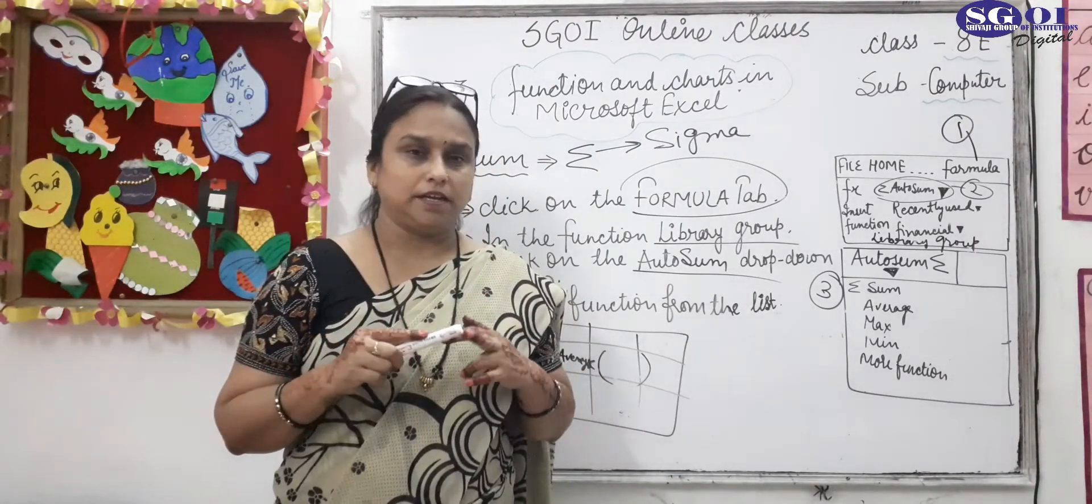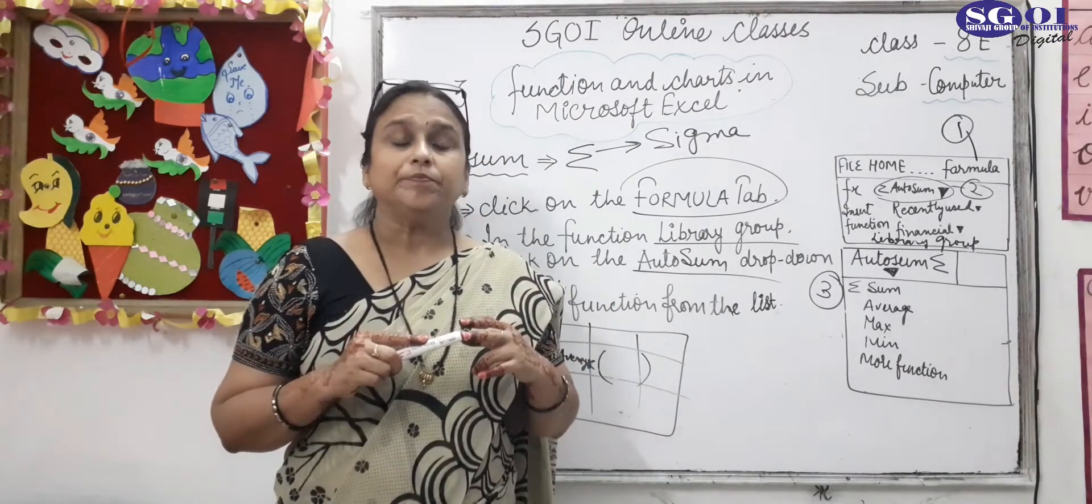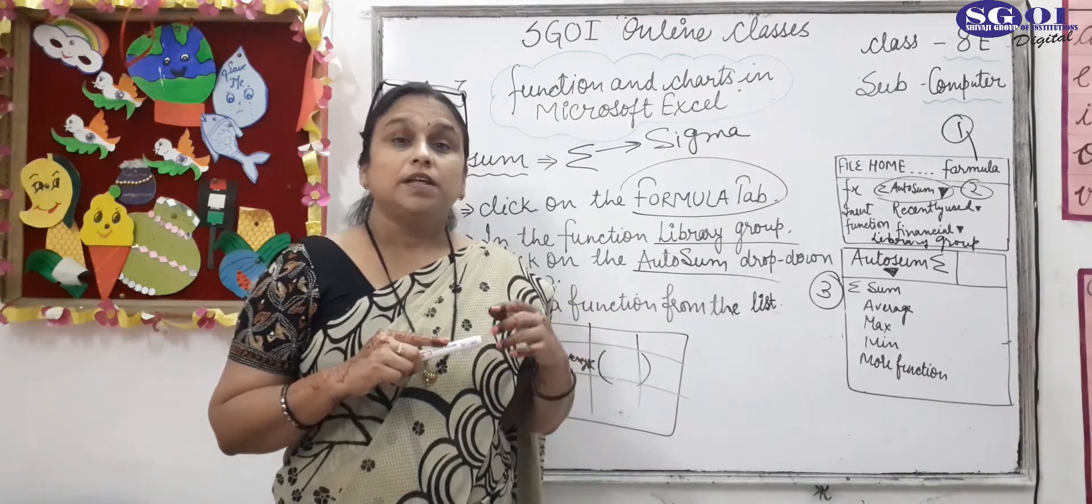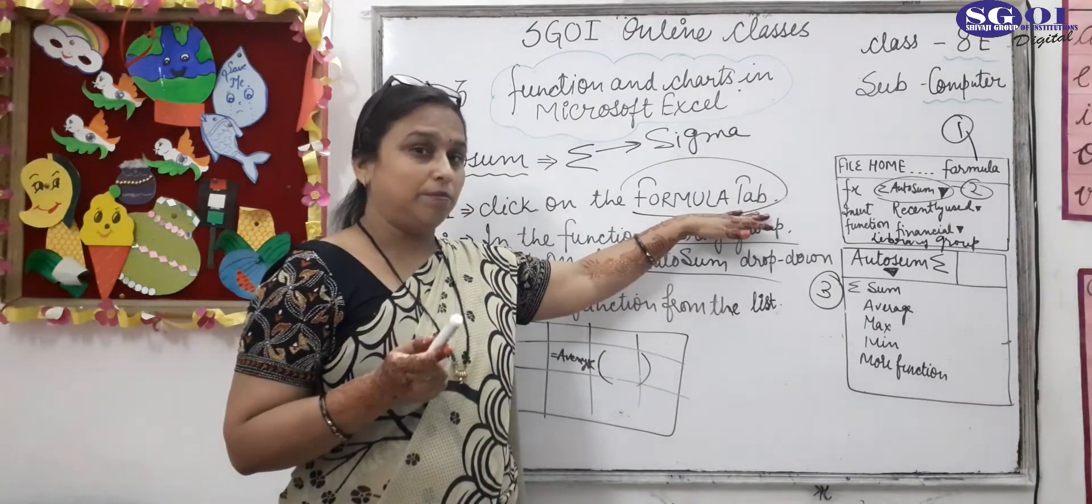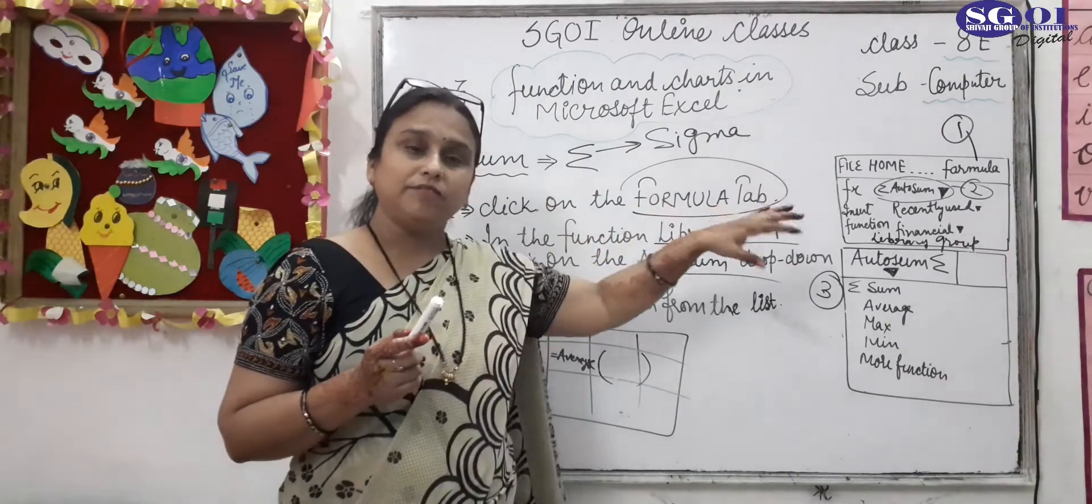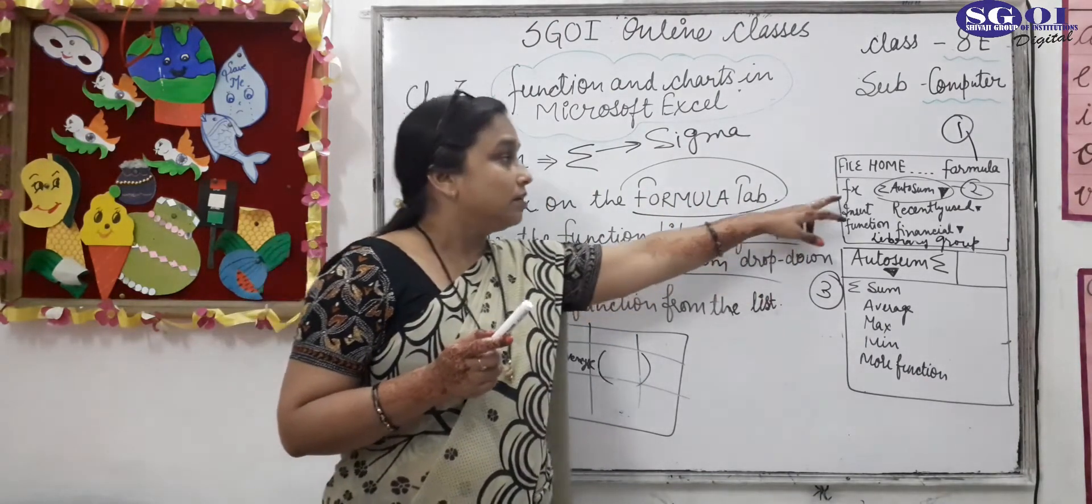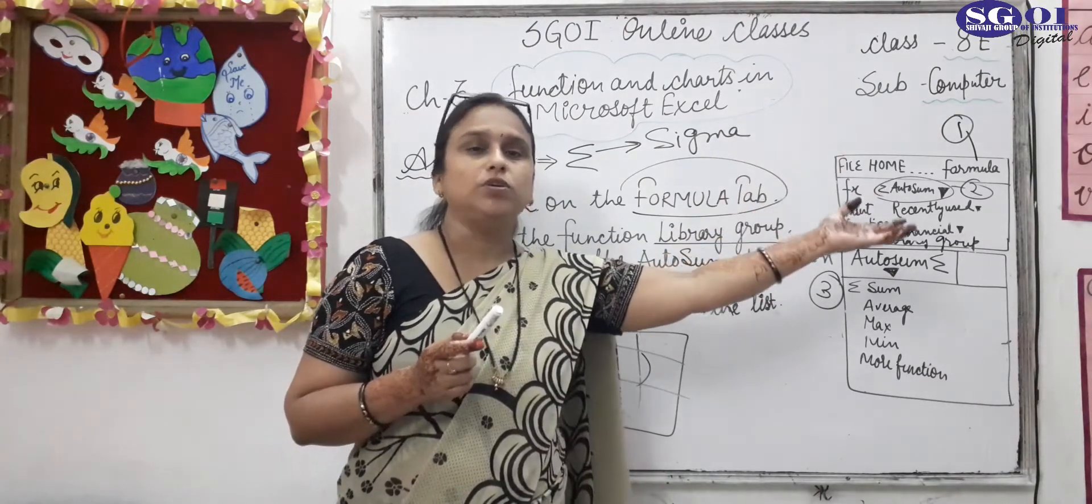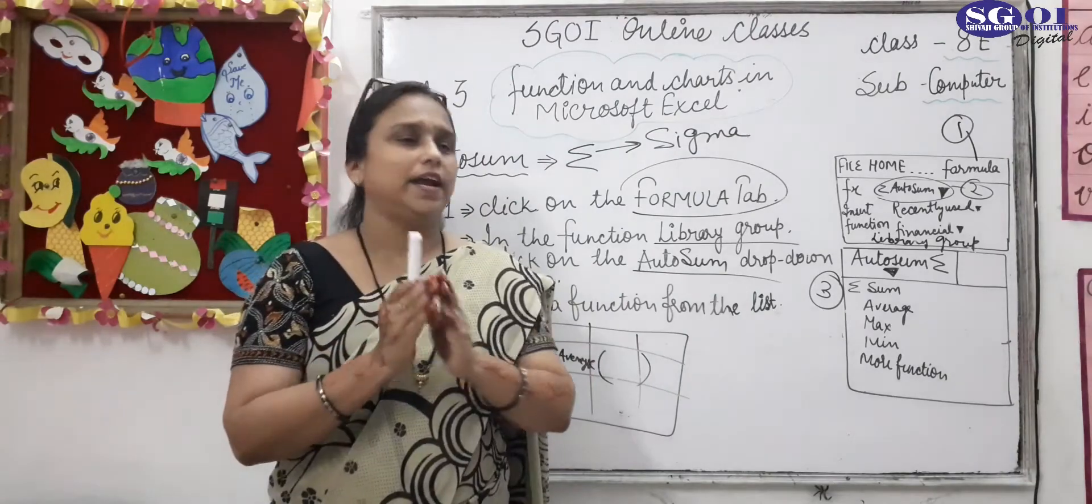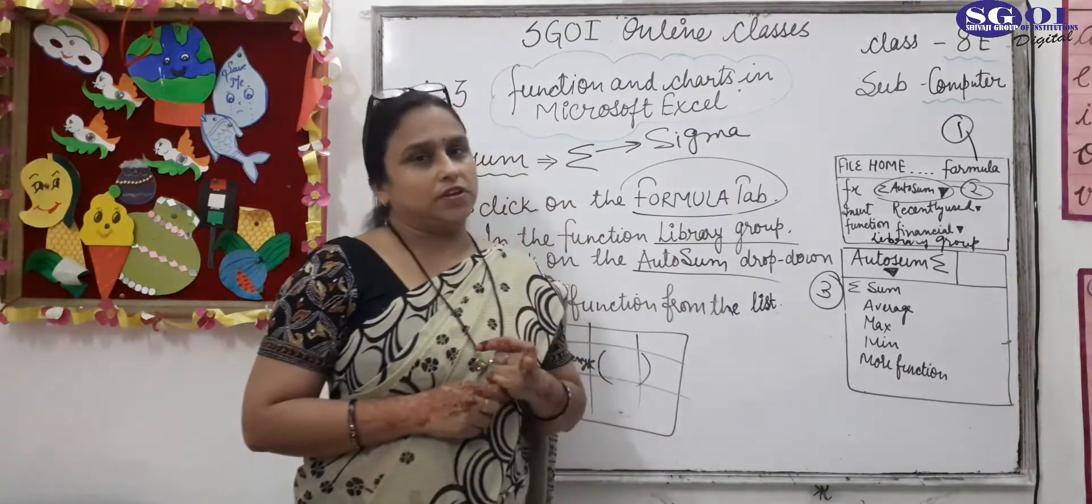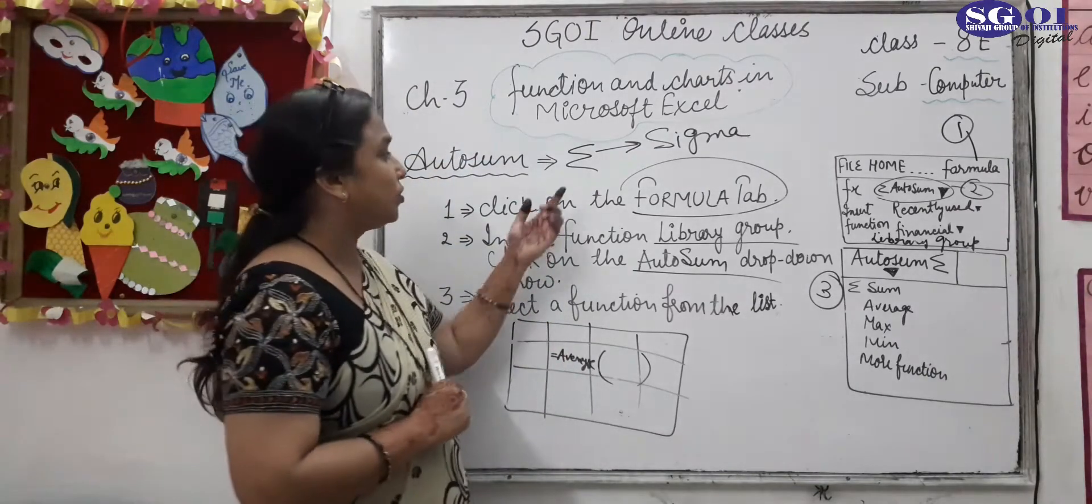So you can see auto sum function or auto sum property what we use and how we can use. Click on formula tab, click on library group, when you click on formula tab in the library function group click on and select auto sum function. In auto sum window you select any function. Clear students, so this we can do auto sum automatically.